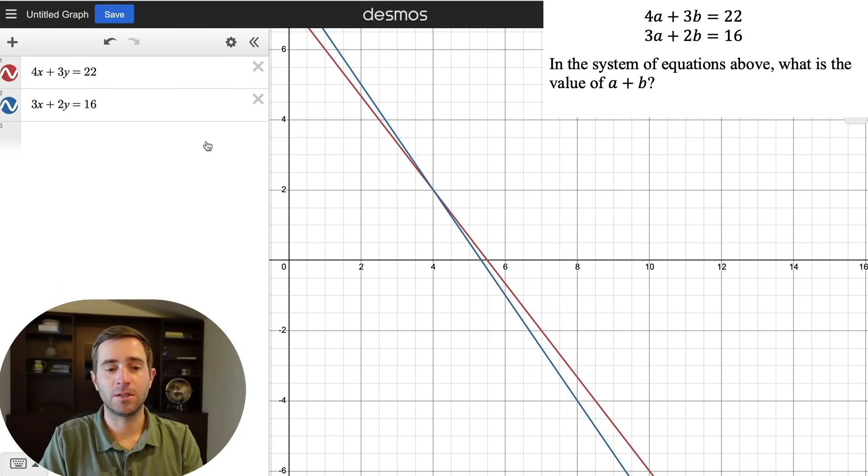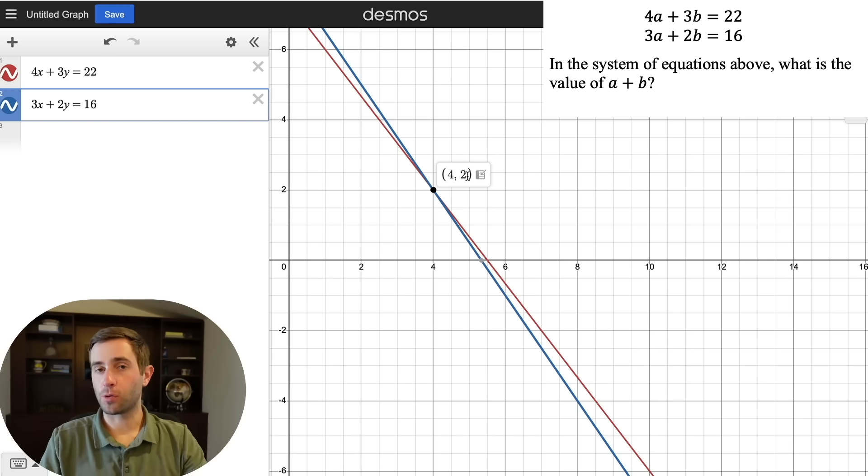Final type of question is system of equations. And you can always do these in Desmos. But one thing we've started to see more on the test is the SAT kind of making where you have to take a step to make stuff Desmos friendly. So here since we see the 4a plus 3b equals 22 and the 3x plus 2y equals 16. If we want to do this in Desmos, we're going to just turn our a's into x's and our b's into y's. Then all you have to do is find the point of intersection. So this is going to tell us that x or a is 4, b or y is 2. So since we're looking for a plus b, we're simply going to do 4 plus 2, and that will give us our correct answer of 6.